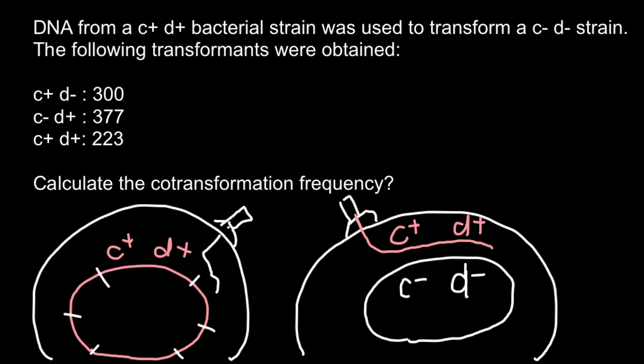One variant might happen that crossing over might happen here, for example, in this place and in this place. In this case, we would see that this fragment would be incorporated into the host DNA of the bacteria and we would see C-positive and D-negative.